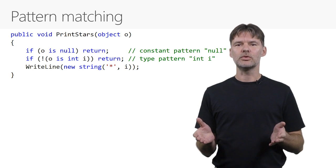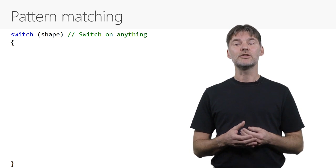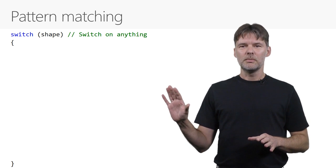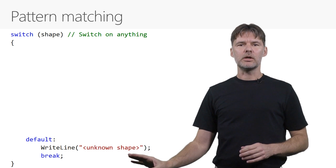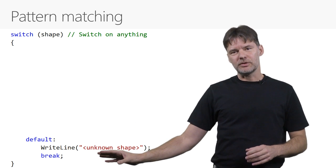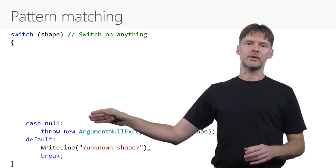Patterns can also be used in switch statements, which have been greatly enhanced in C# 7.0. First, we can now switch on anything. The switch expression is no longer limited to primitive types and strings. And if we start from the bottom, we of course still have default sections and cases with constants, as with null here.